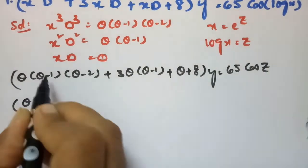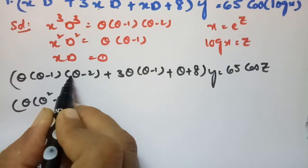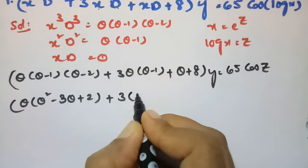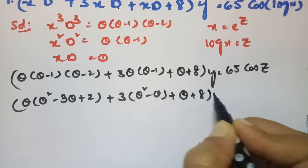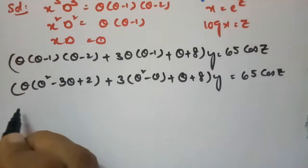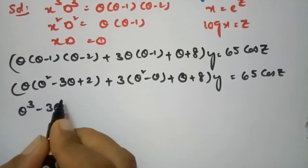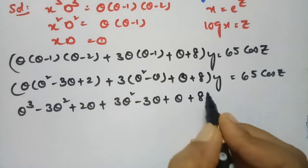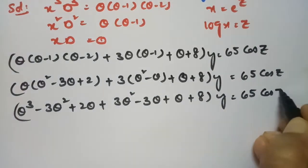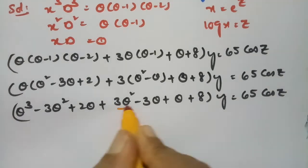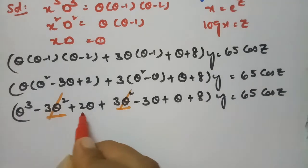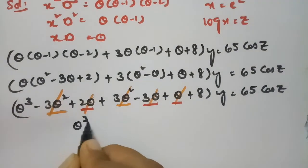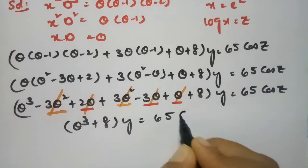Now multiplying out: θ(θ-1)(θ-2) gives θ³ - 3θ² + 2θ. Multiplying the 3·θ(θ-1) term gives 3θ² - 3θ. Combining: the +3θ² and -3θ² cancel, the +2θ and -3θ and +θ also cancel, leaving θ³ + 8 of y = 65 cos z.